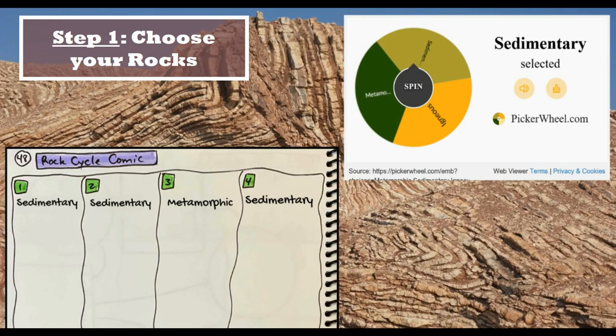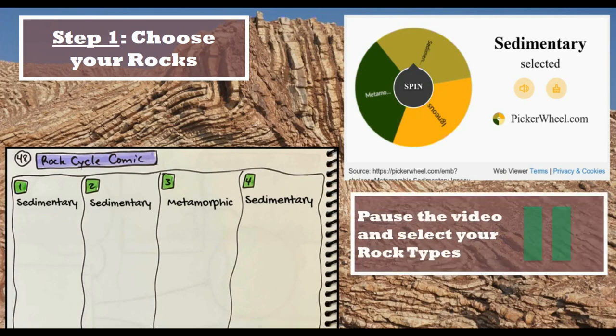Now I'm going to have you pause this video, open up the spinner, and spin to find your four rock types. You cannot have the same series of rock types as what I have.